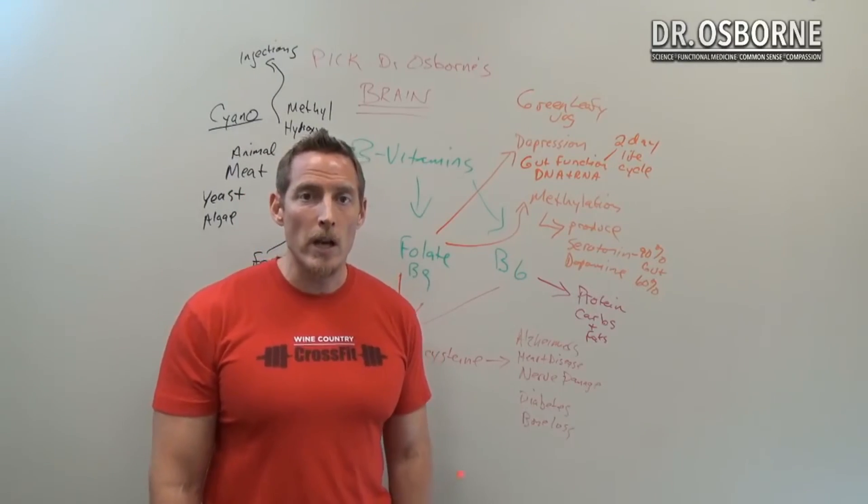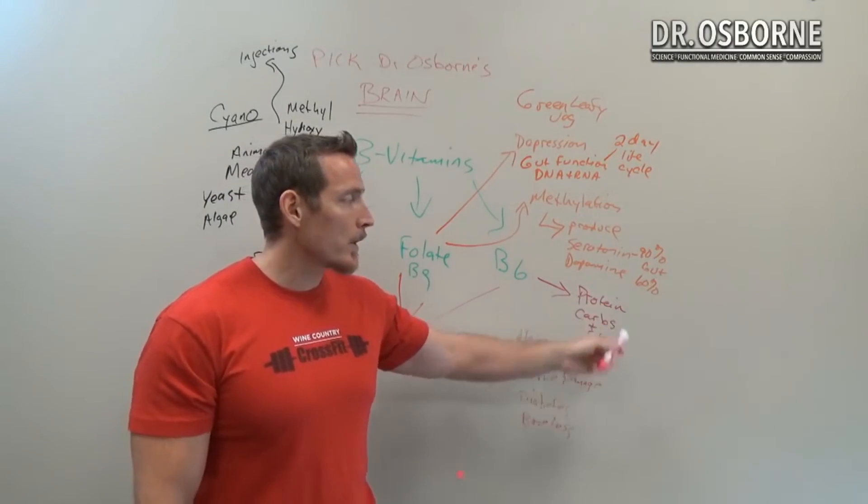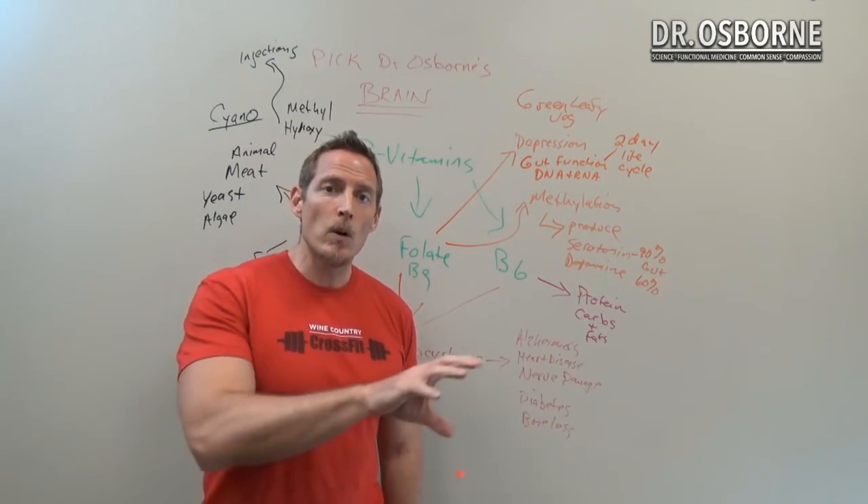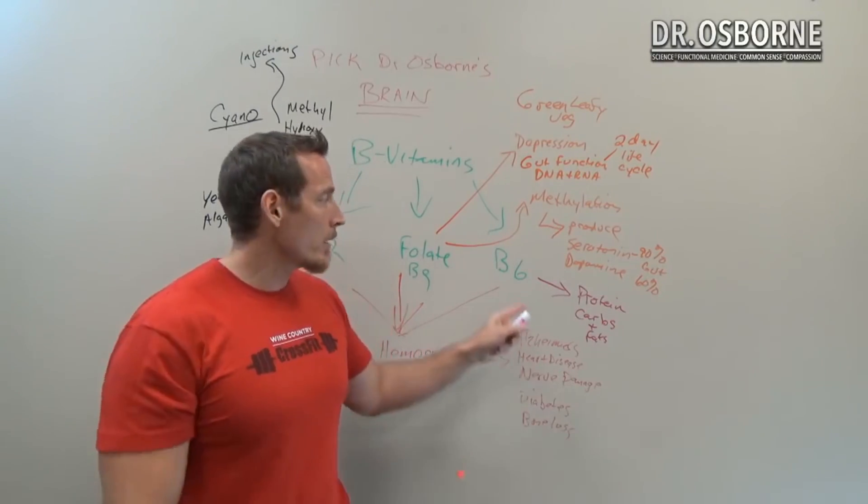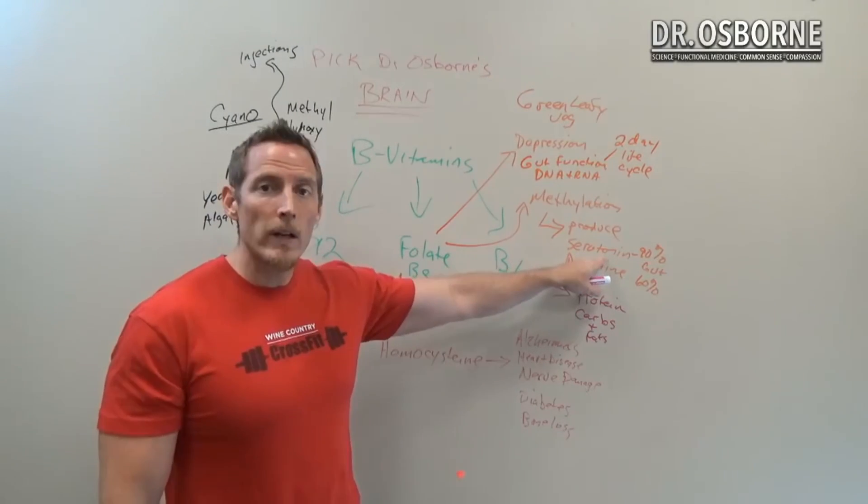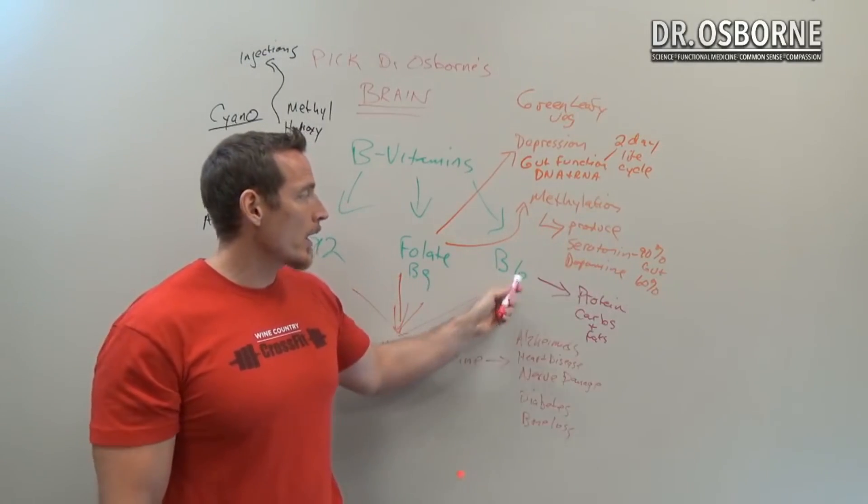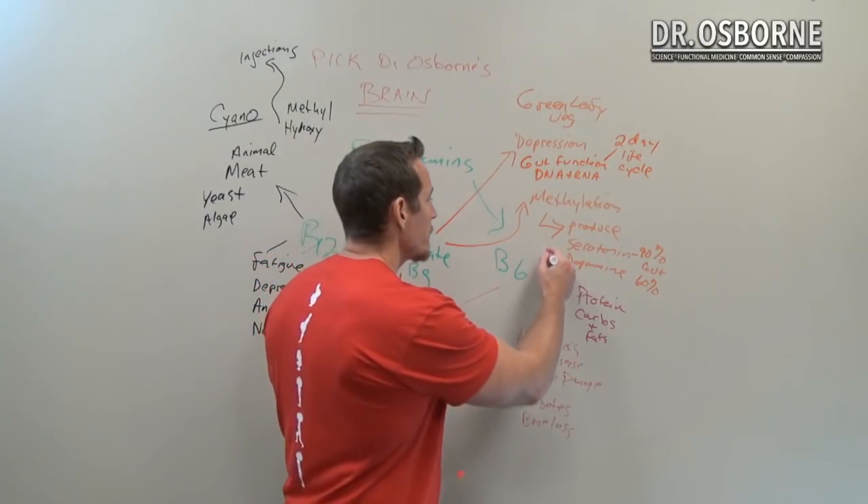It also helps to convert proteins—different proteins—into our amino acids, into different neurotransmitters. We need vitamin B6 for serotonin as well. So folate, again there's some overlap here; we've got B6 in this process overlapping.